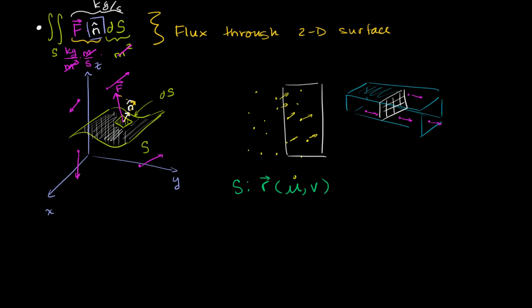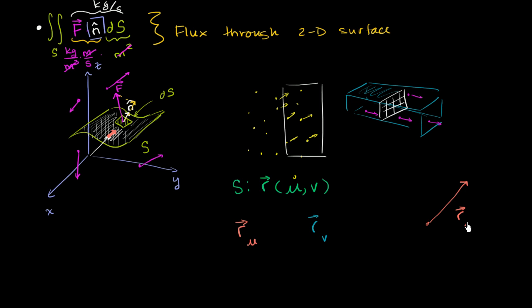Now let's think about what the directions of the partial of r with respect to u and the partial of r with respect to v look like. For some point (u, v), the position vector takes us to that point on the surface. If we increment u just a little bit, we get to another point on the surface. The r_u vector's direction is going to be tangent to the surface at that point — essentially pointing toward that nearby point along the surface.